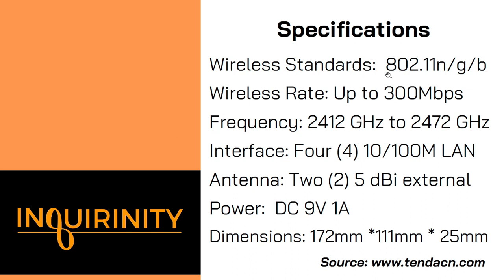For the model specification, it supports 802.11n wireless standards. For the wireless rate, it supports up to 300 Mbps, depending on the scenario, interference, and device capability. The frequency it operates at is 2.4 GHz. It has four 100 Mbps LAN interfaces, two external 5 dBi antennas, and it can be powered by a DC 9 volts 1 ampere adapter.